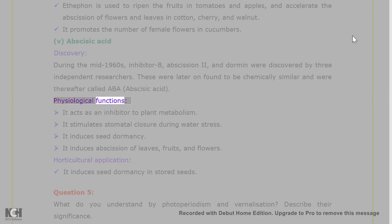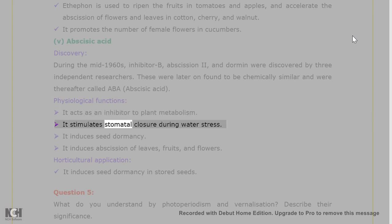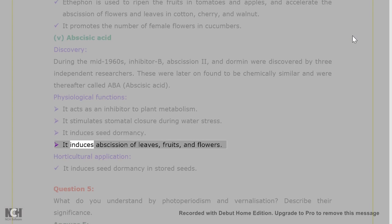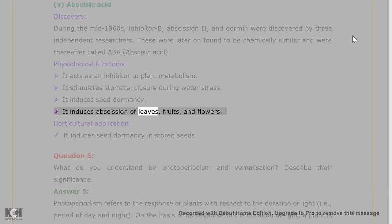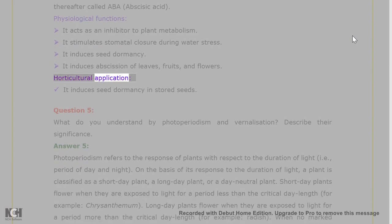Physiological functions of abscisic acid: it acts as an inhibitor to plant metabolism. It stimulates stomatal closure during water stress. It induces seed dormancy. It induces abscission of leaves, fruits, and flowers. Horticultural application: it induces seed dormancy in stored seeds.